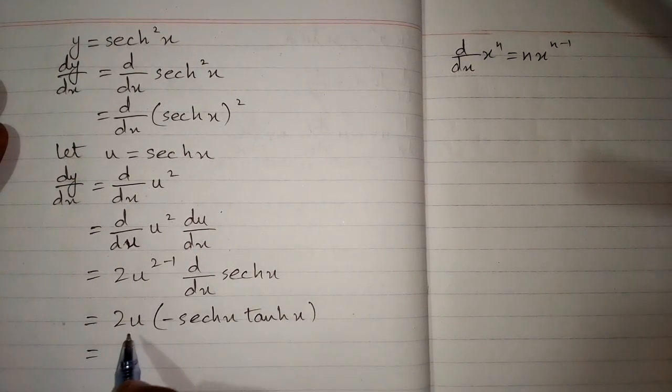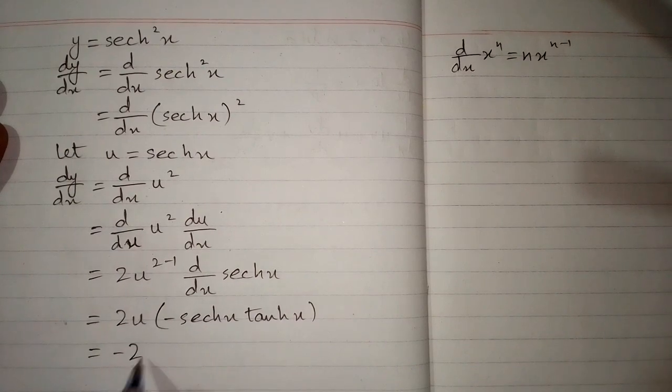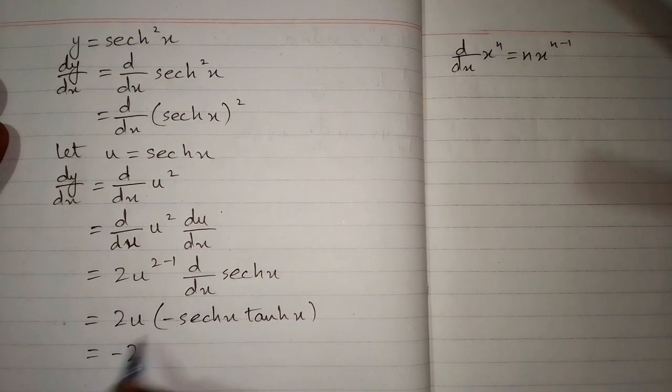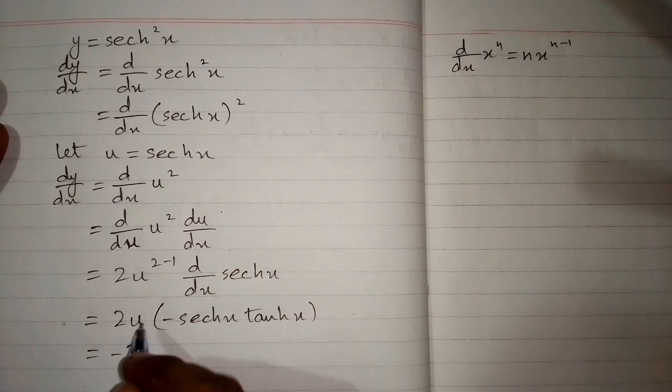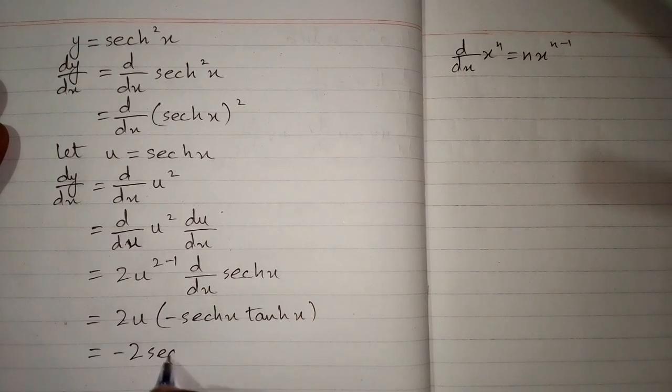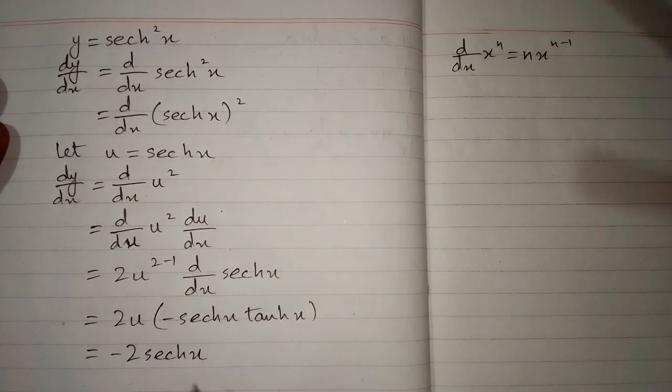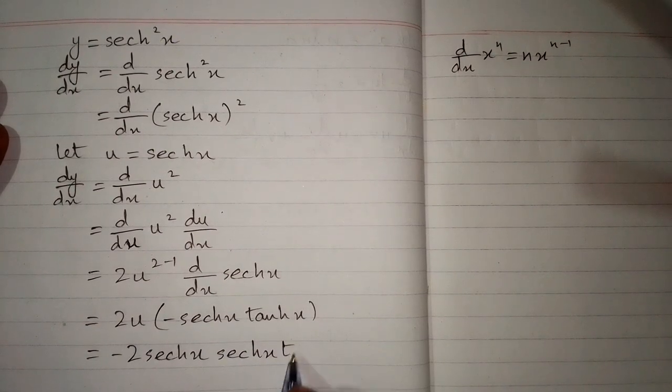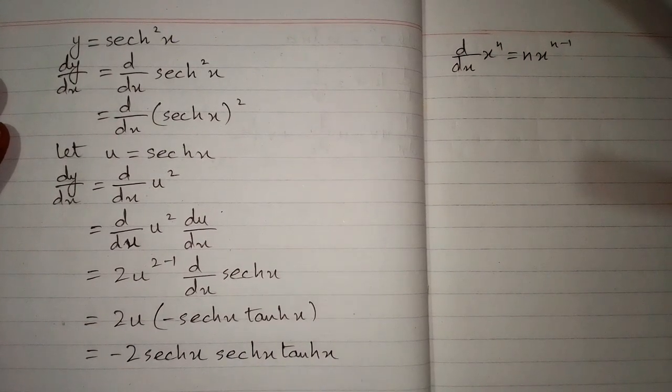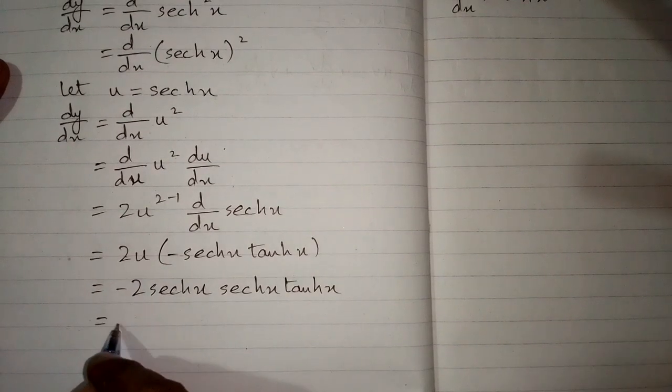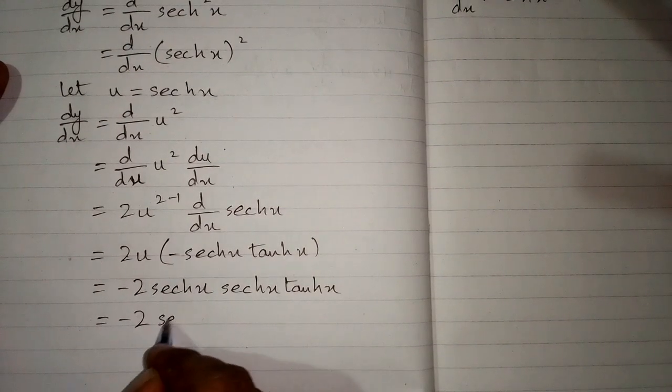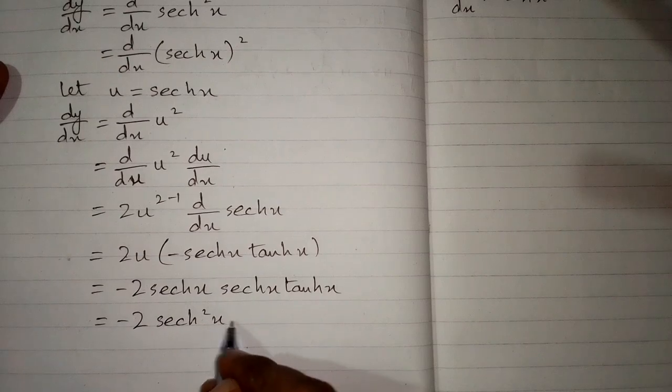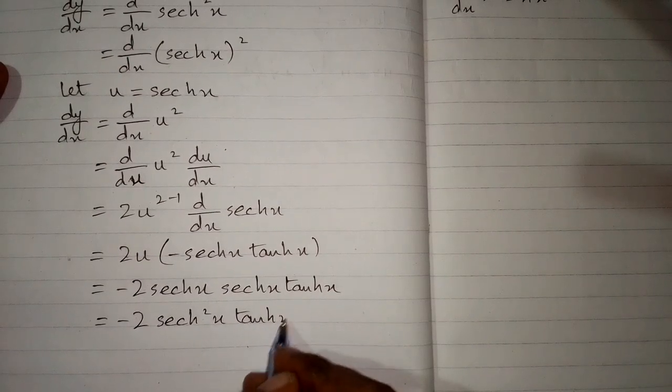Now we substitute the value of u. We have 2 multiplied by minus, which gives minus 2. In place of u we write hyperbolic sech x, then again hyperbolic sech x, then hyperbolic tanh x. So the answer is -2 times hyperbolic sech squared x times hyperbolic tanh x.